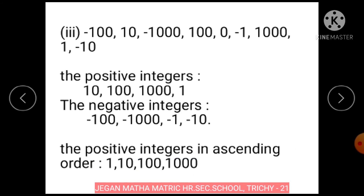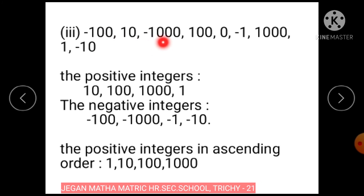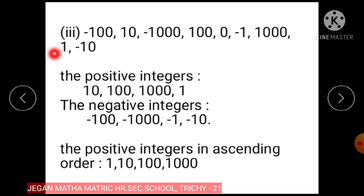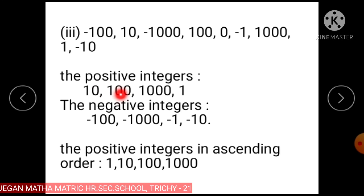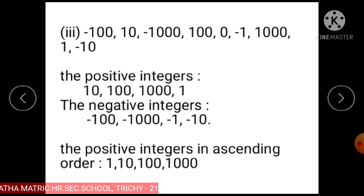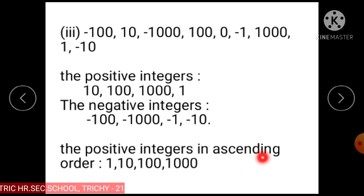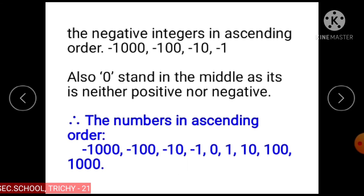Subdivision 3: The given integers are minus 100, plus 10, minus 1000, 100, 0, minus 1, plus 1000, plus 1, and minus 10. The negative integers are minus 100, minus 1000, minus 1, and minus 10. The positive integers in ascending order are 1, 10, 100, and 1000. The negative integers in ascending order are minus 1000, minus 100, minus 10, and minus 1.